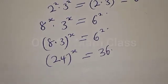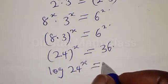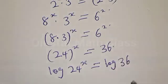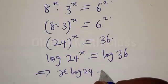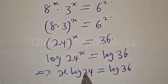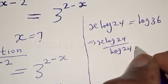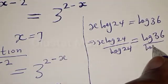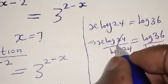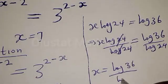Now let's take the log of both sides. Therefore we have log of 24 raised to power x equal to log of 36. That gives us x times log 24 equal to log 36. Now let's divide both sides by log 24. Then s equals log 36 over log 24.